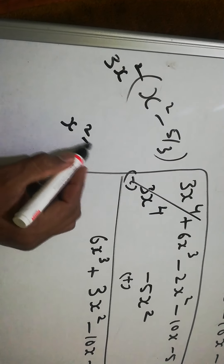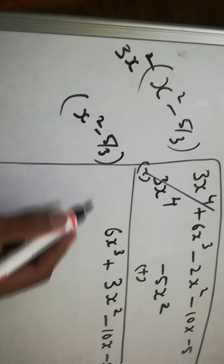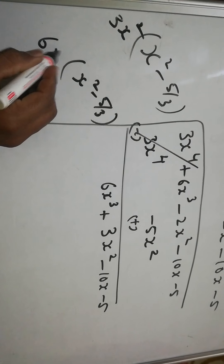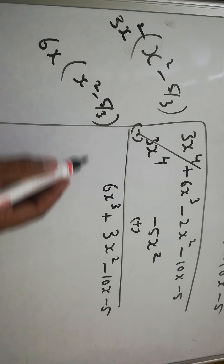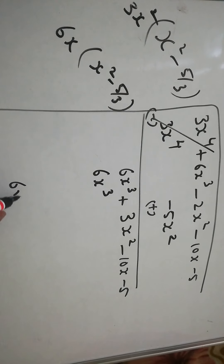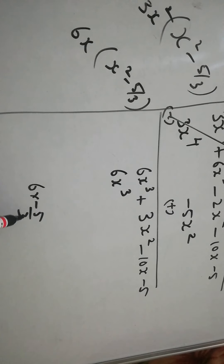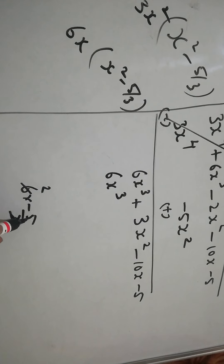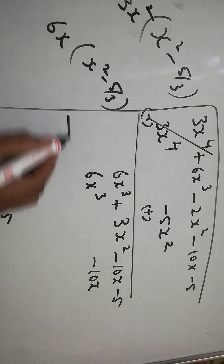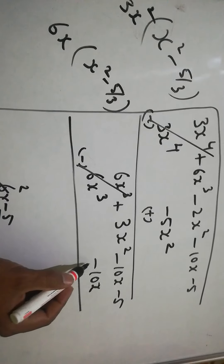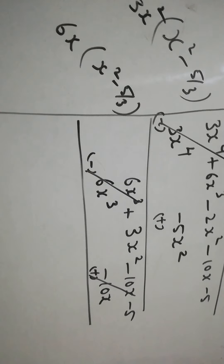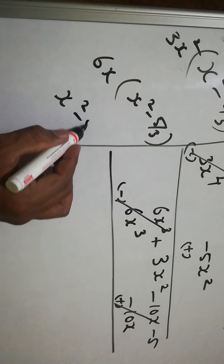Dividing again by x² - 5/3: to get 6x³, we multiply by 6x. Then 6x times (-5/3): 6 divided by 3 is 2, giving -10x. We write -10x, then change the sign and cancel. So we get 2.